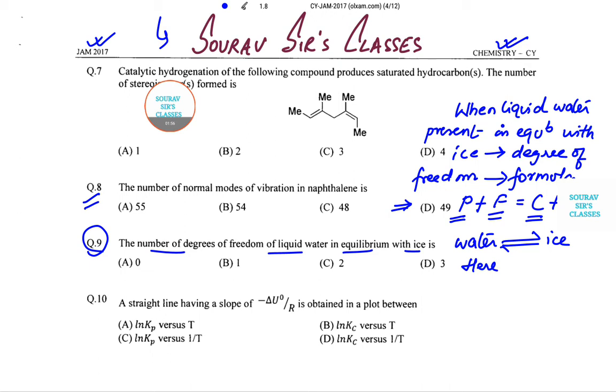P, that is number of phases, is 2, and the number of components is 1. We need to calculate F using the formula. So F becomes C plus 2 minus P. Using this formula, so let us substitute the values quickly: 1 plus 2 minus 2, degree of freedom becomes 1.